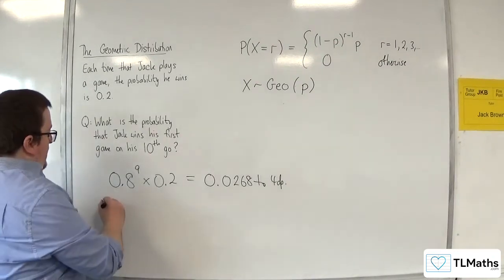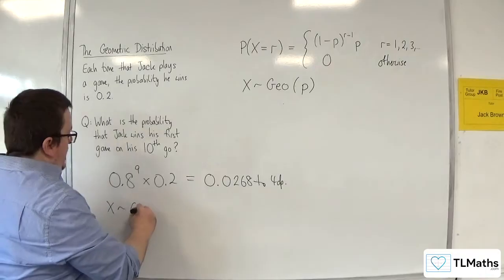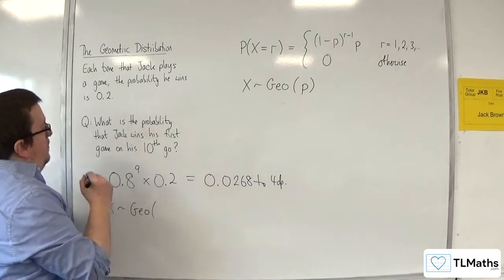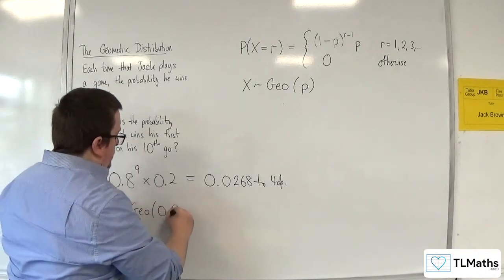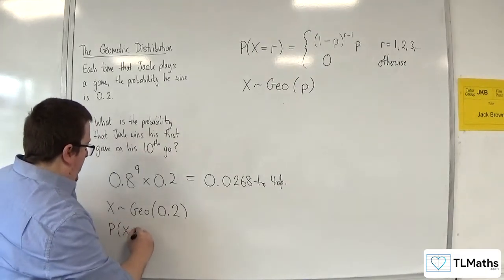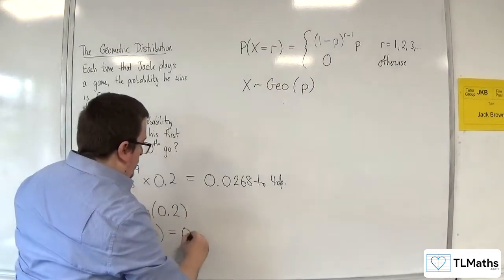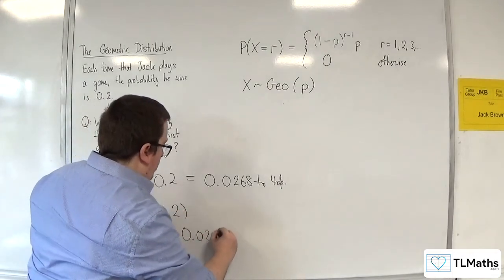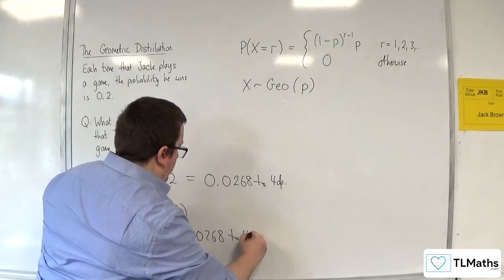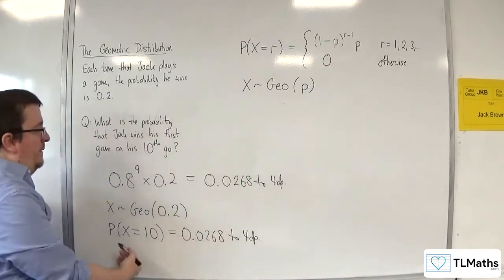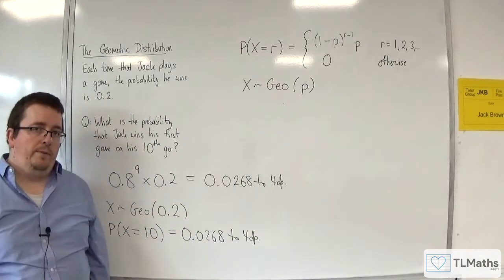And I'm looking for the probability of X being equal to 10, and that is 0.0268 to 4 decimal places. So that is how we can formally write it.